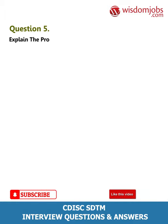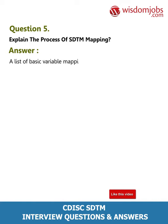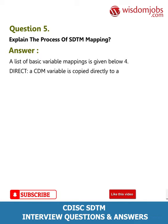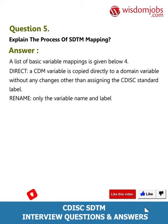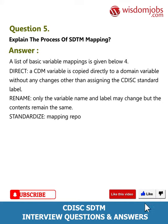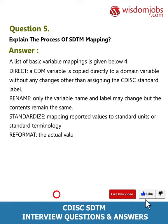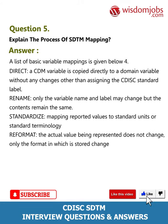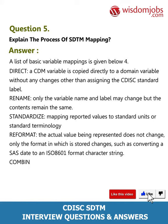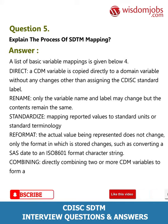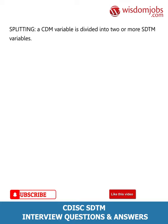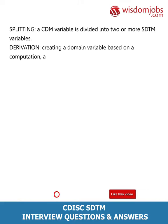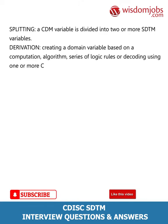Question 5: Explain the process of SDTM mapping. Answer: A list of basic variable mappings includes: Direct — iCDM variable is copied directly to a domain variable without changes other than assigning the CDISC standard label; Rename — only the variable name and label may change but contents remain the same; Standardize — mapping reported values to standard units or terminology; Reformat — the actual value does not change, only the storage format (e.g., converting a SAS date to ISO 8601); Combining — two or more CDM variables form a single SDTM variable; Splitting — an iCDM variable is divided into two or more SDTM variables; and Derivation — creating a domain variable based on a computation algorithm, logic rules, or decoding using one or more CDM variables.